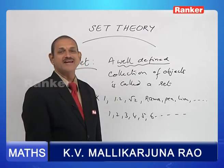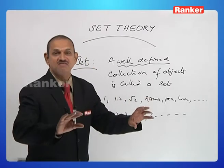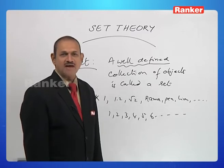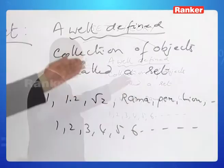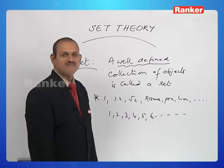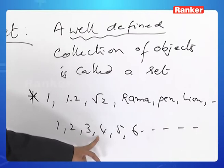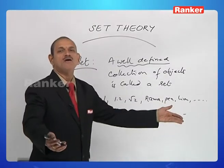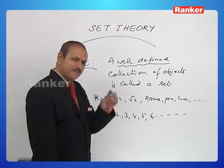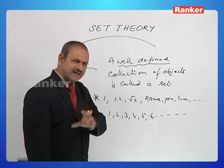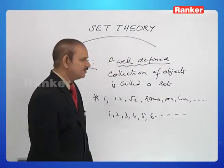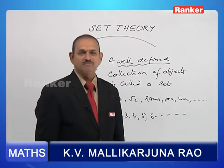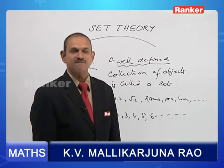Moreover, there is a definition to the word 'well-definedness.' A collection is said to be well-defined if it is possible to decide whether a particular object belongs to the collection. For example, does 1.3 belong to the collection of natural numbers? No — we can say that perfectly. But does pi times r-squared belong? We do not know; we cannot decide. That is why that collection is not well-defined. Such well-defined collections are, of course, called sets.